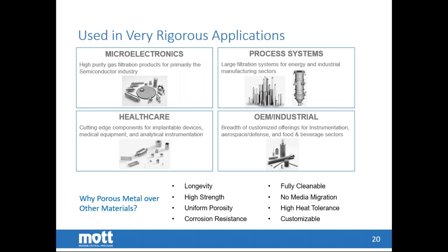Mott's porous metal media is used across a wide variety of industries: microelectronics and semiconductor manufacturing requiring parts-per-billion filtration of very fine particles; process systems including oil, gas, and chemical processing; healthcare including implantable medical devices, liquid chromatography, gas chromatography, and lab equipment; and OEM industrial applications spanning aerospace and defense, food and beverage, and much more.